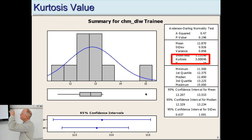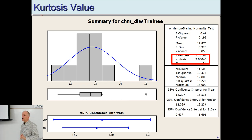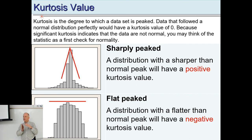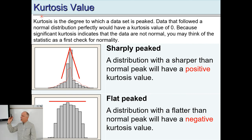Scrolling down, we get to kurtosis and skewness. Looking at the trainee dataset, it has a kurtosis of 3. If you go to the Minitab help menu and type in kurtosis, you'll find that the kurtosis value describes how peaked the data is. A positive kurtosis means the center of the peak is higher than you'd expect — you're climbing the data and at the middle it spikes up, then back down to a gradual slope.